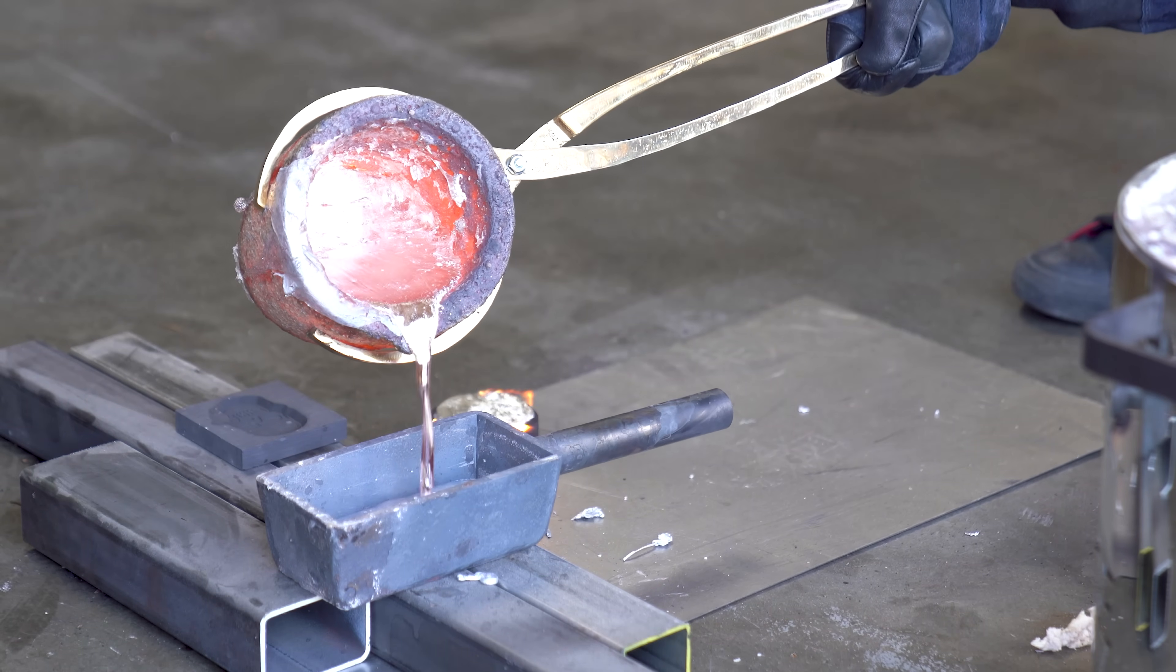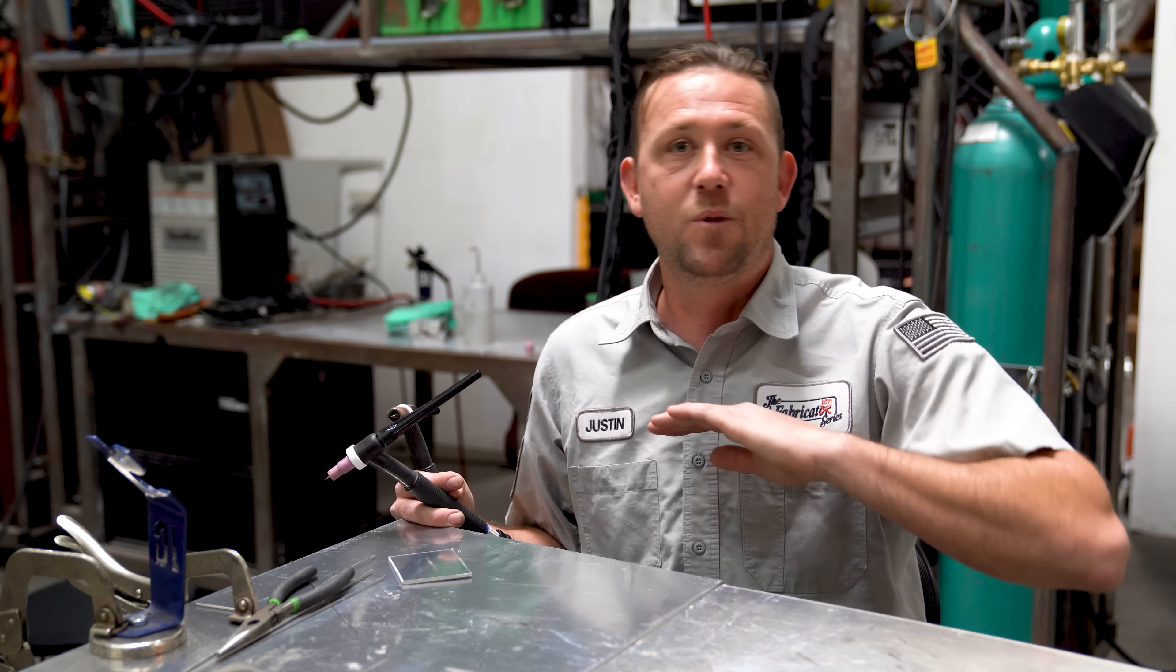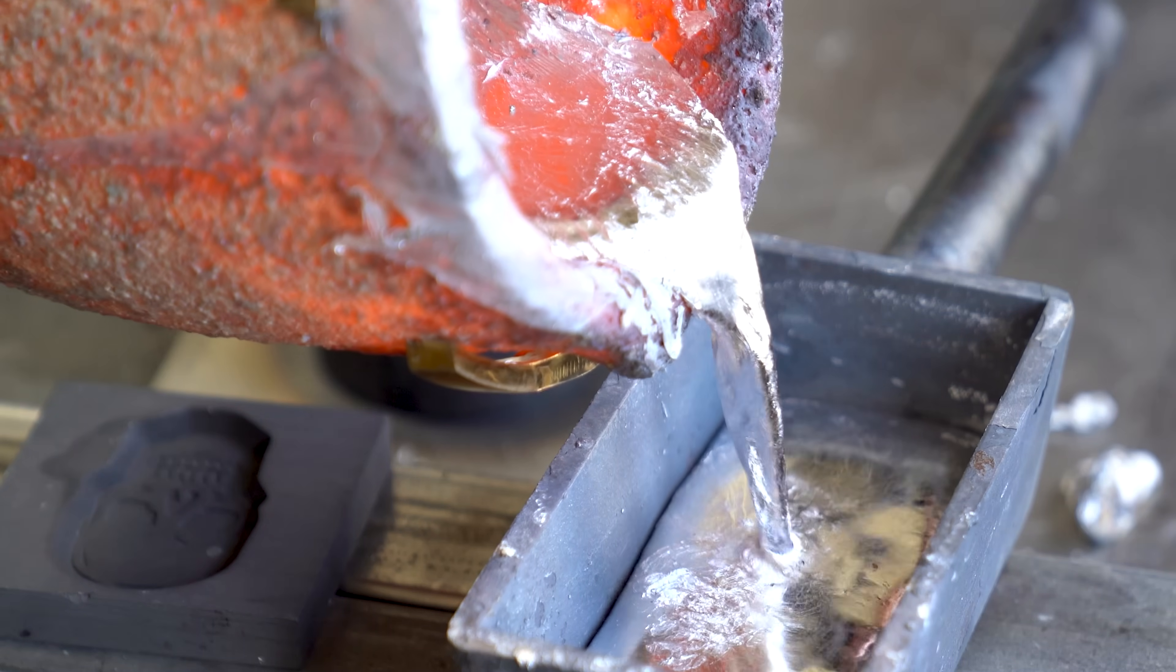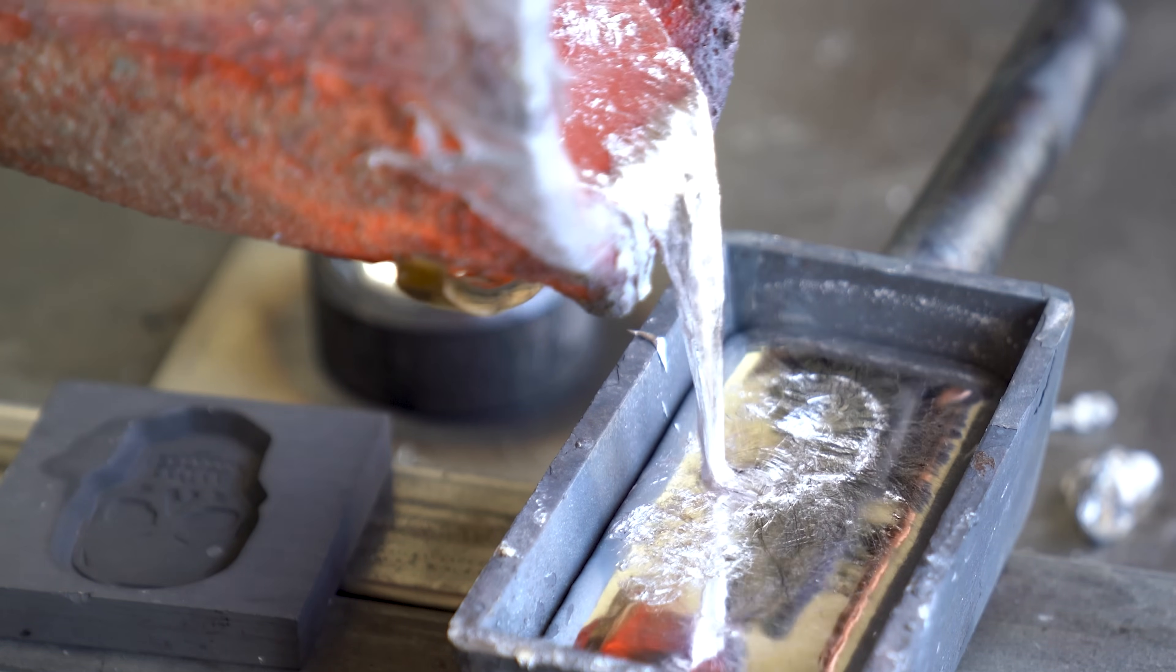In other words, you can pretty much keep molten aluminum out in the atmosphere all day long, and the oxide layer won't do anything except for stay present as it protects the core layer. You can actually see the oxide layer present when pouring molten aluminum into a mold, for example.